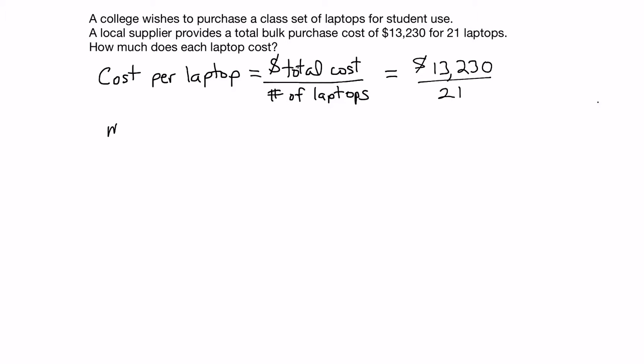So method number 3 is called the dots method, and it works like so. In this case we start with the largest number, which is the 13,230, that's what we're dividing into, and we write that number out as follows: 13230. Each digit is in its own place value column.